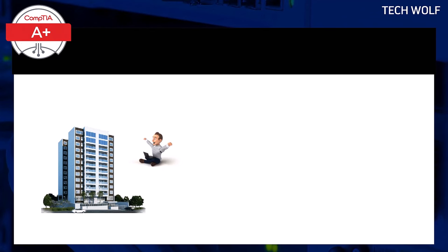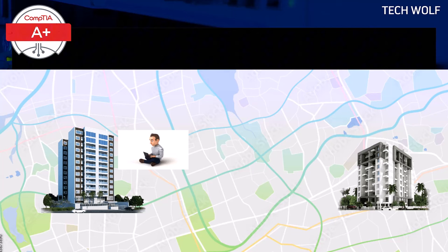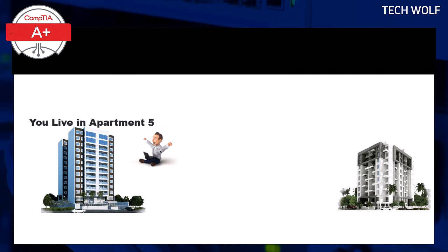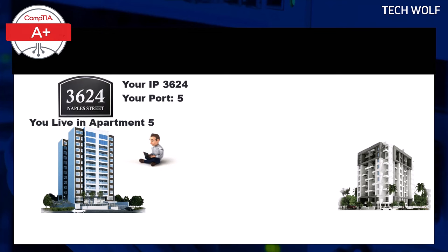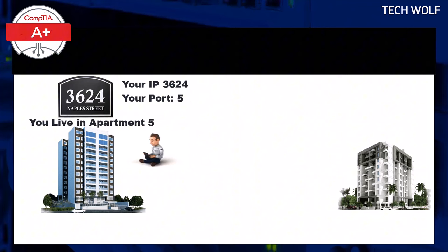Imagine you are in your apartment building and you are planning to visit a friend who lives across the city, waiting in his apartment building. Your apartment number is like a port number in networking, and the apartment building's street address is like an IP address. Just like your apartment number tells someone exactly which unit you live in inside the building, a port number tells your device exactly which service or app should receive the message.